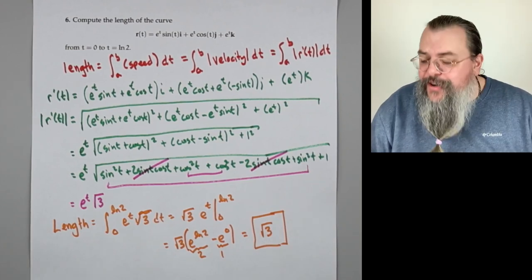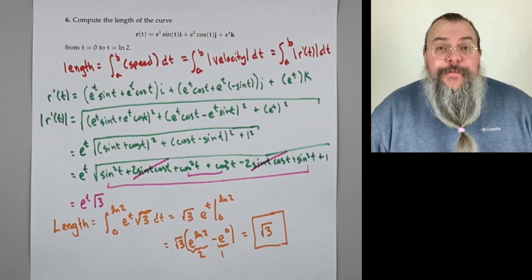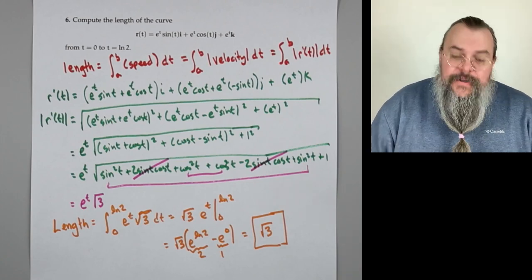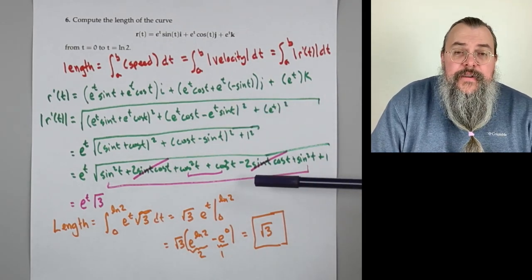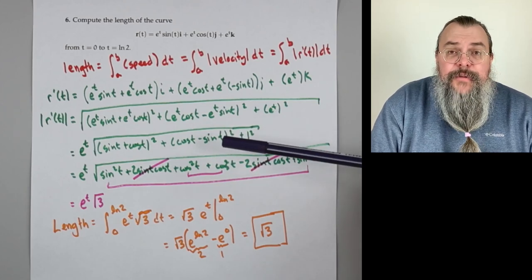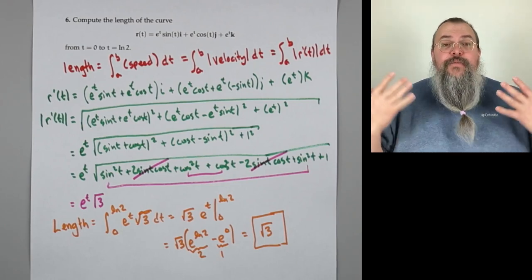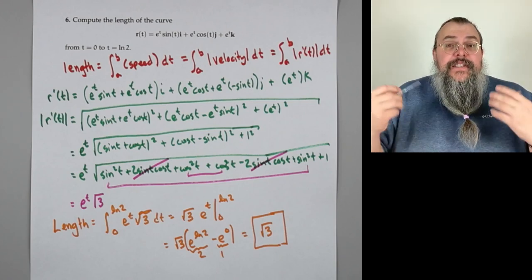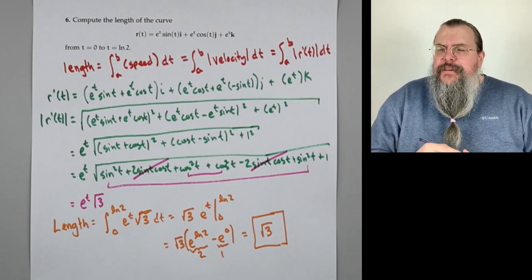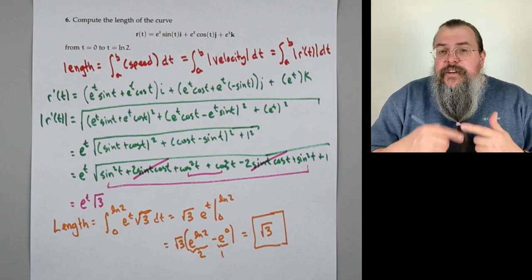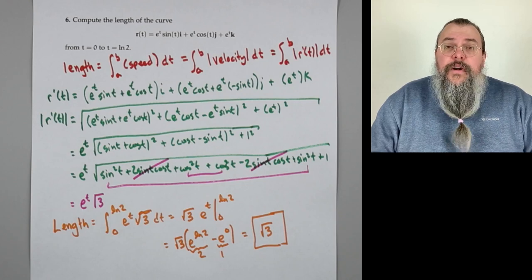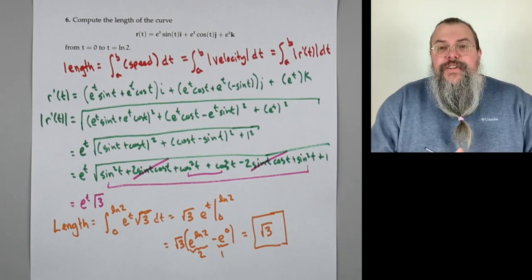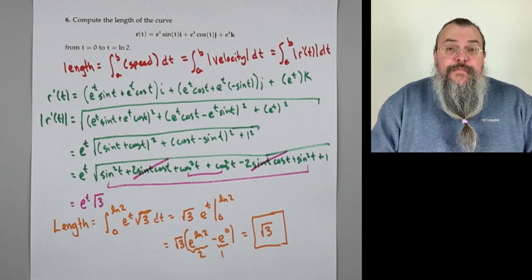What a nice answer — the kind of answer you take home to meet your family. The challenge for this one is being careful and cleaning up your algebra. Here's a good rule of thumb: if they ask you to find something, it's going to be something reasonable. They're not going to ask you to do an integral with terrible things inside a square root — something nice should happen. If it didn't, check your algebra, check your trig identities. Your calculus professors like you and want you to succeed.